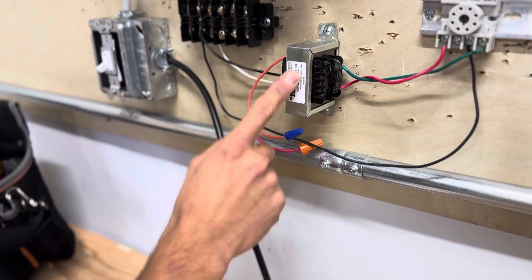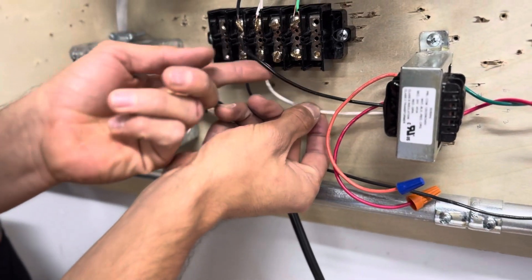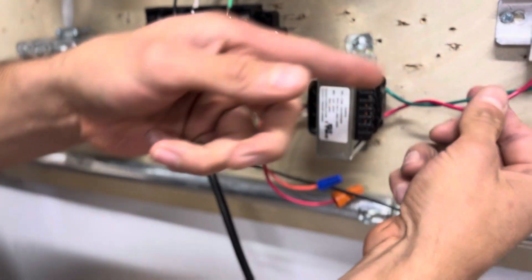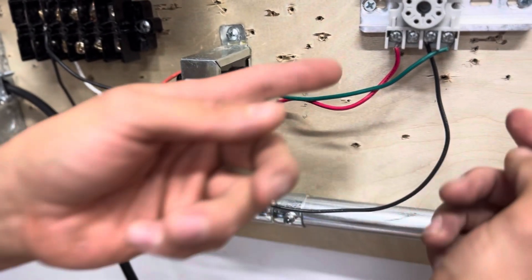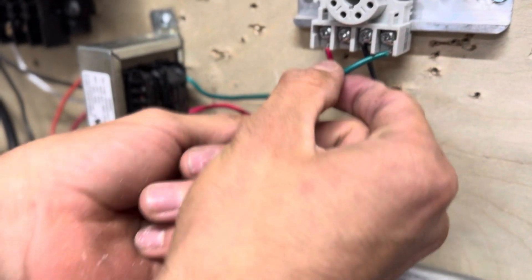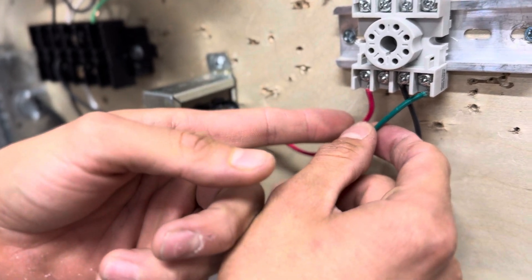It comes from this step down transformer. So we have to feed in a line and a neutral here in order to step down that voltage and make that 24 volts. Now these are your pins 2 and 7 here for the coil. Now order does not matter for the coil meaning the polarity can be reversed.